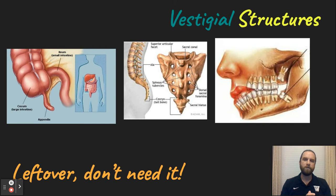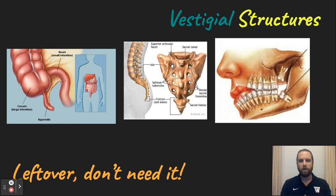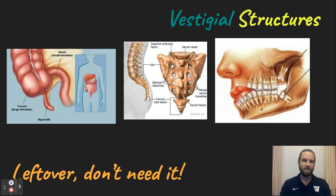The other structures we're going to look at are vestigial structures. These are leftover structures that once served a purpose but no longer do so, like the tailbone, appendix, or even wisdom teeth in human beings.